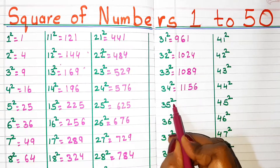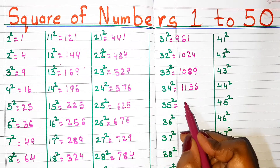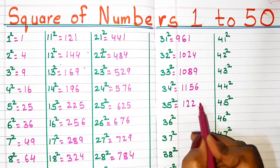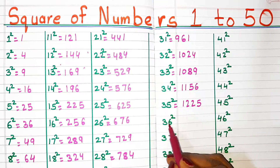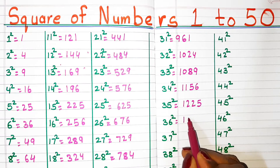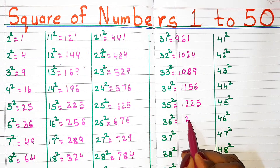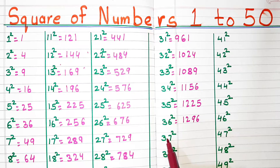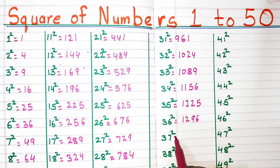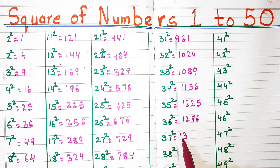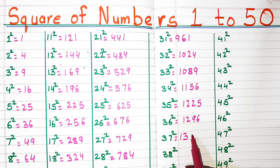Square of 35, 1225. Square of 36, 1296. Square of 37, 1369.